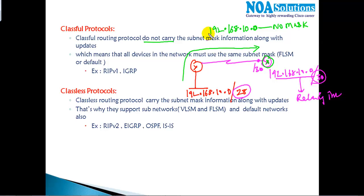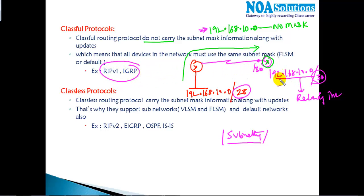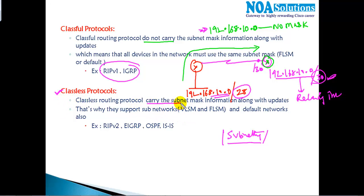When the receiving router gets the update with no subnet mask, it writes down the subnet mask of its own receiving interface — so if that interface is /30, it writes /30; if /28, it writes /28. In the early days when subnetting didn't exist this was fine, but once VLSM and FLSM concepts were introduced, this behavior affects routing information because you may be using /28 but the neighbor understands a different mask, meaning incorrect routing information is propagated.